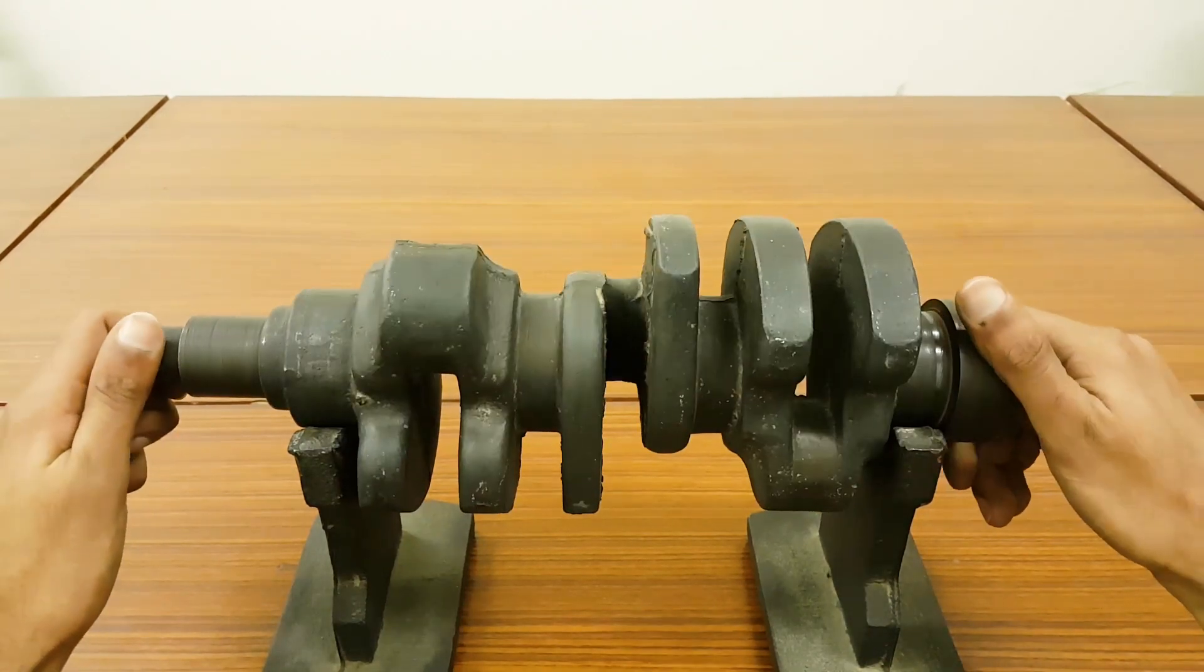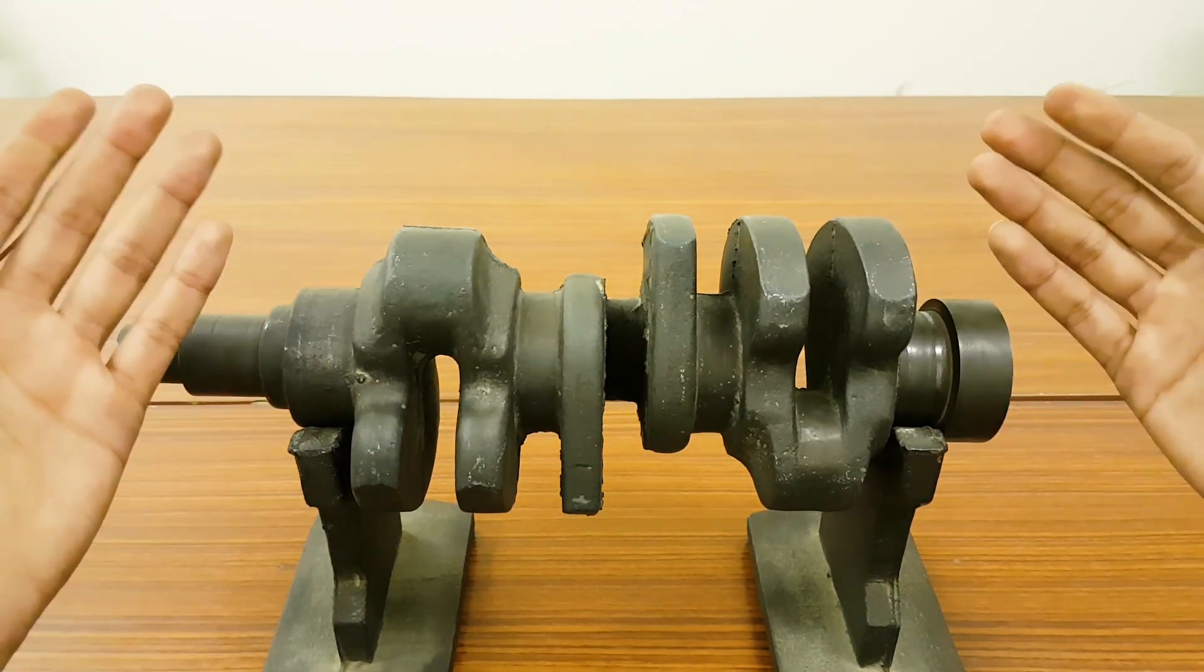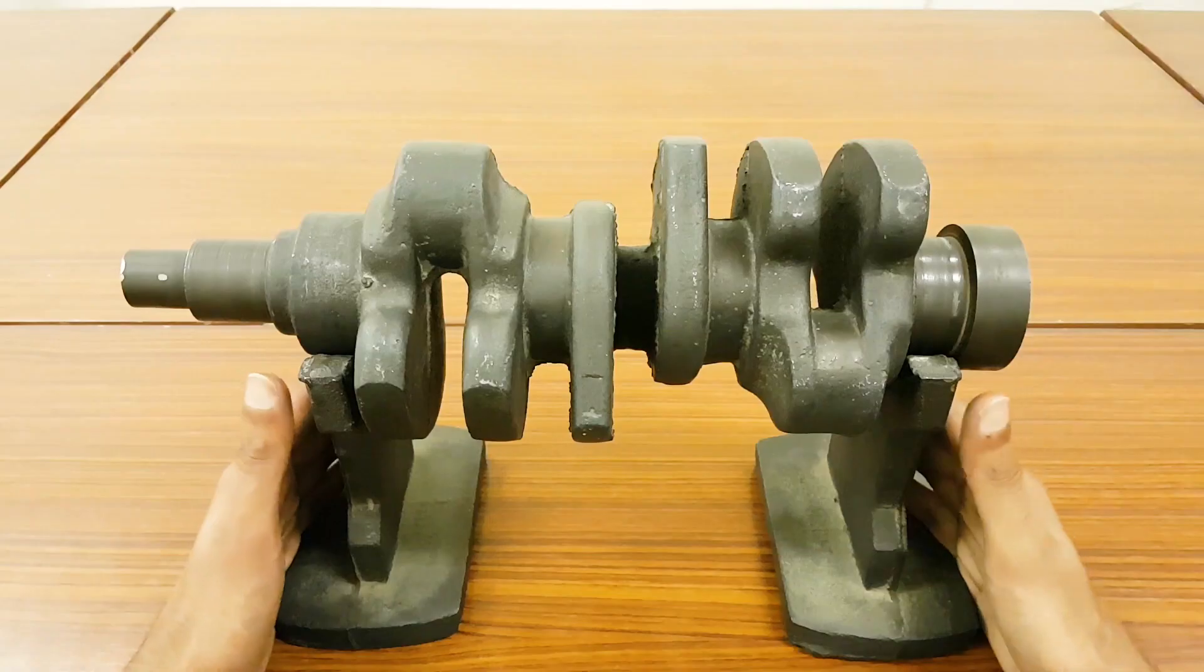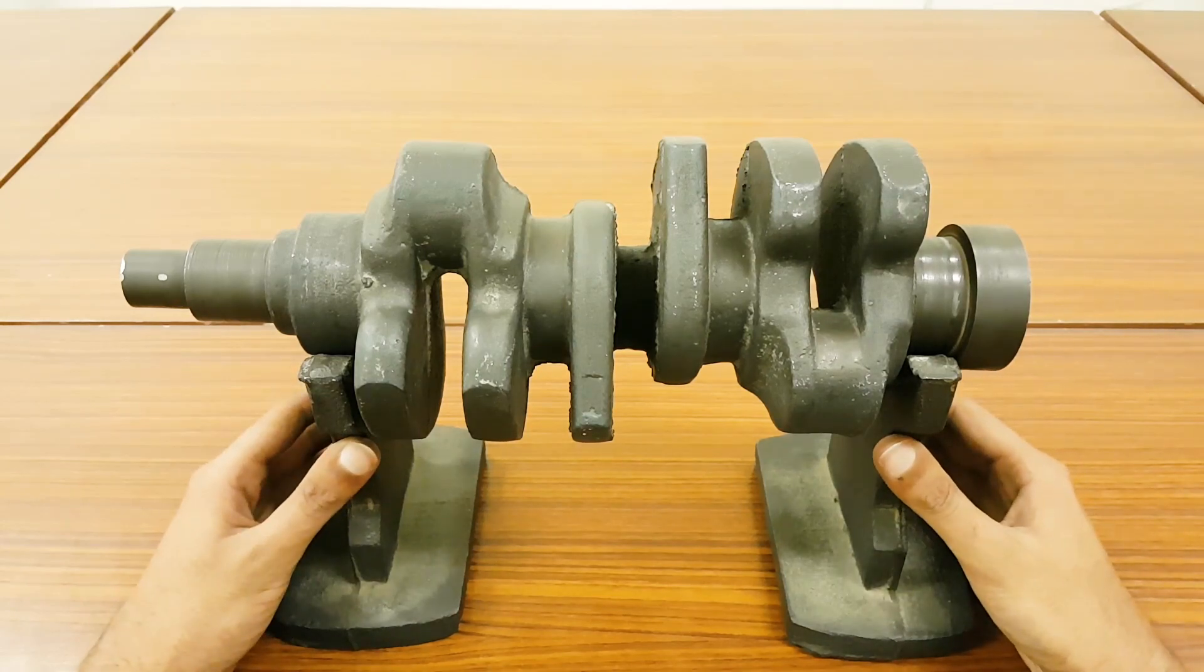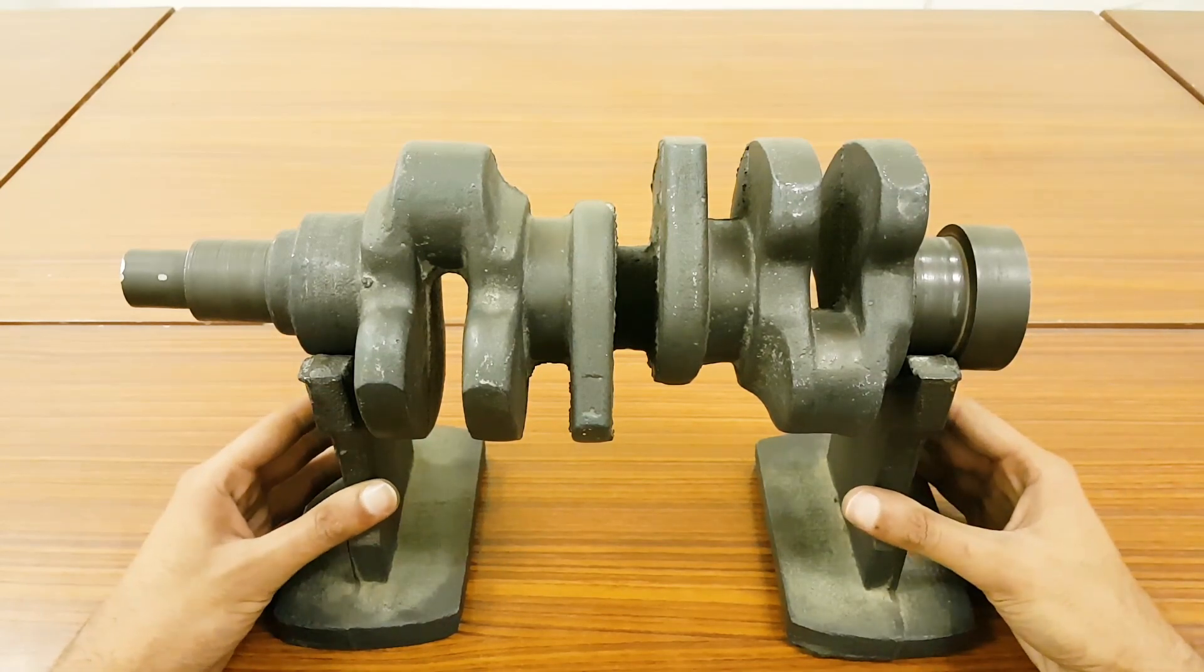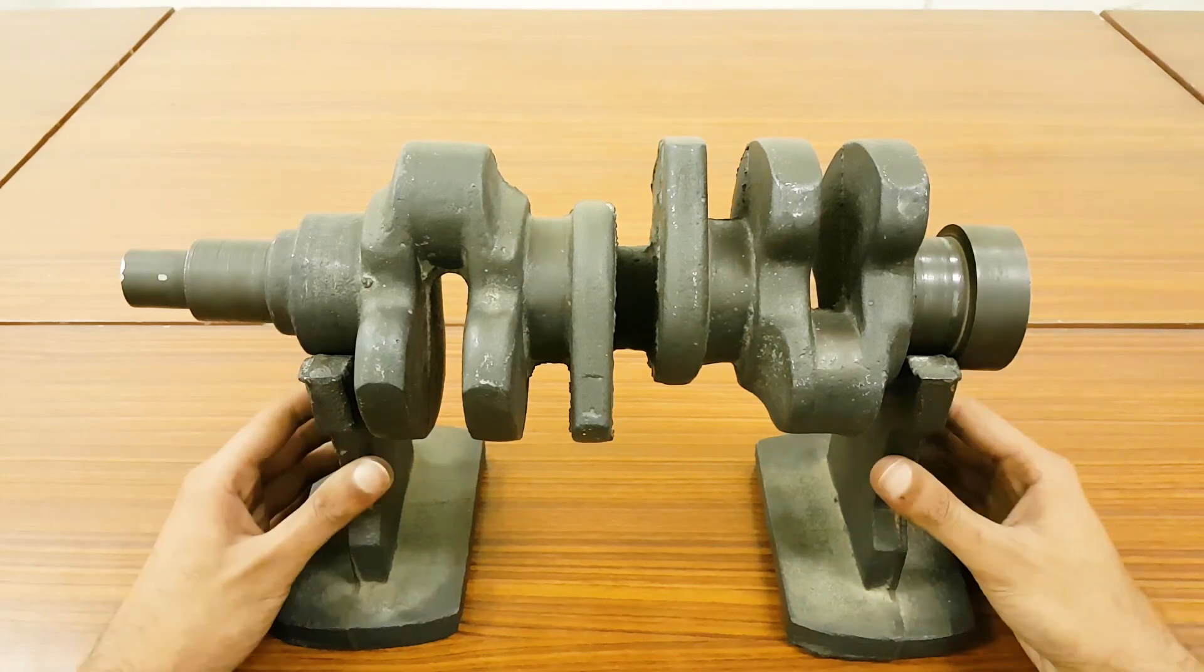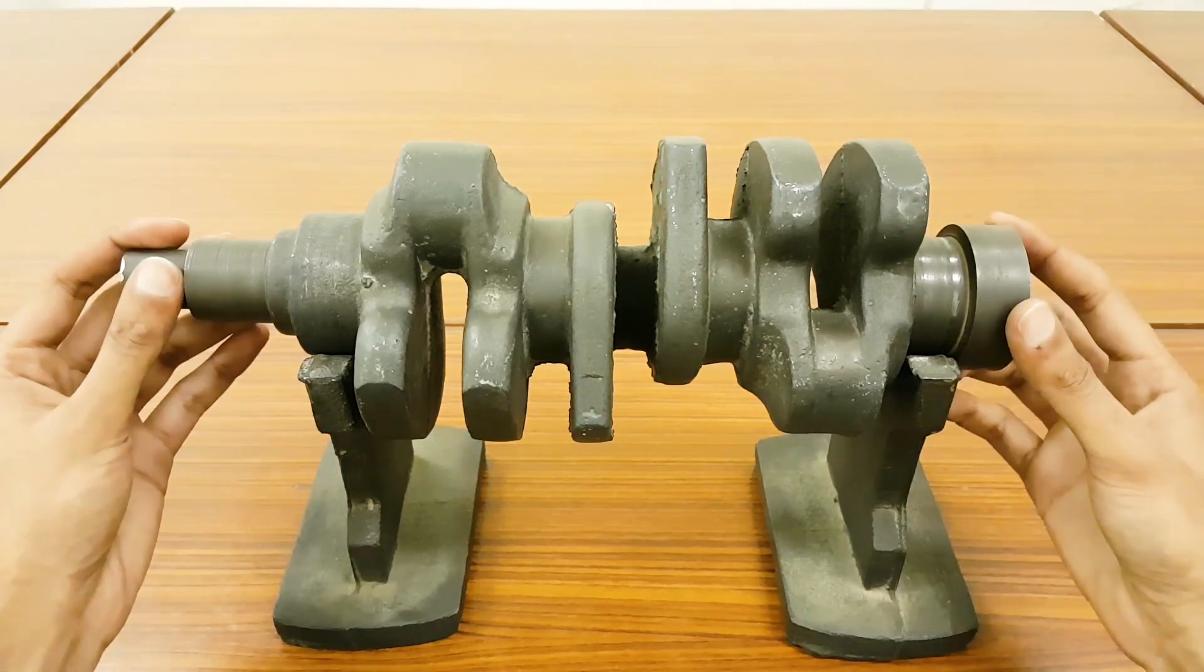Mostly crankshafts are made from high speed steel, high carbon steel, or in high performance engines or automobiles you will find the crankshafts are made out of titanium alloy.